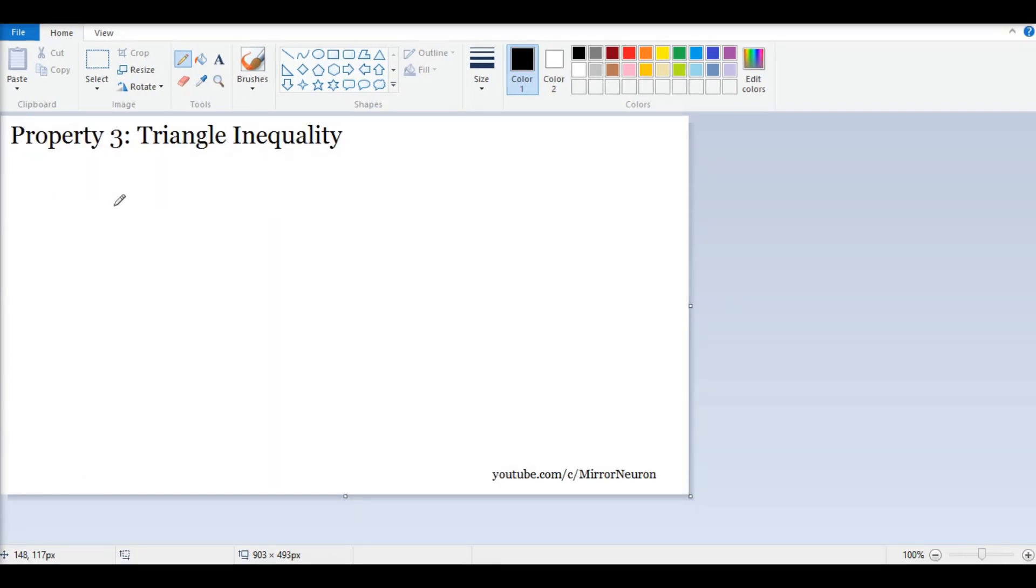All right, so that takes us to the third property, which is triangle inequality. So what does triangle inequality say? So suppose I have a point A here in a plane, I have a point here, say B, and say I have a third point here, C. So if I travel from point A to B and represent it by a vector, say A, and then I travel from point B to C and say give it a vector B.